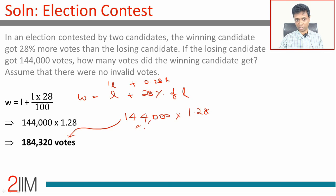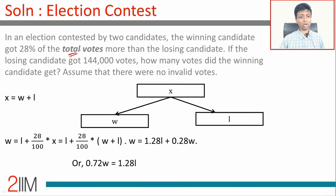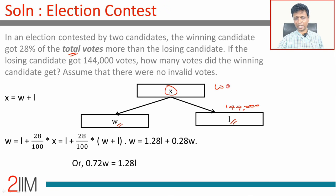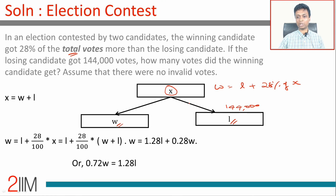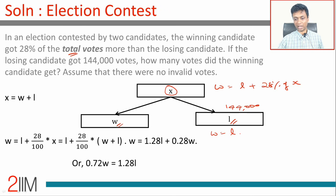Now go to the second part, which is the more interesting part. The winning candidate gets 28% of the total votes more than the losing candidate. Let the total votes be X. The winning candidate gets W, the losing candidate gets L; L is 144,000. The winning candidate gets more than the losing candidate by 28% of X, so W equals L plus 28% of X.